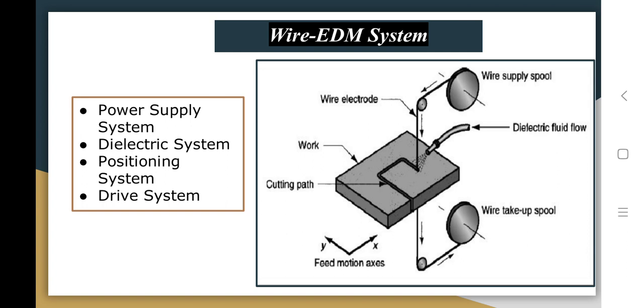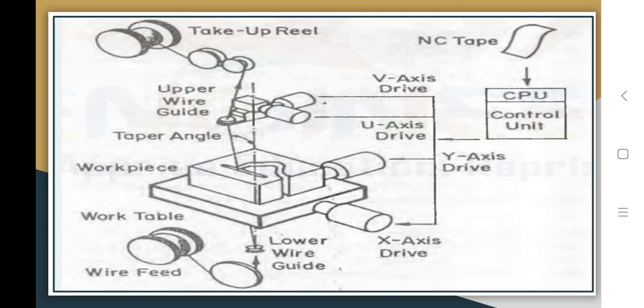In this diagram you can see the different elements or components of the Wire EDM system. The first component is the power supply, the second is the dielectric system, the third is the positioning system, and the main one is the drive system. This diagram shows the total system with all elements: the DC power supply, the positioning system, and the dielectric system.